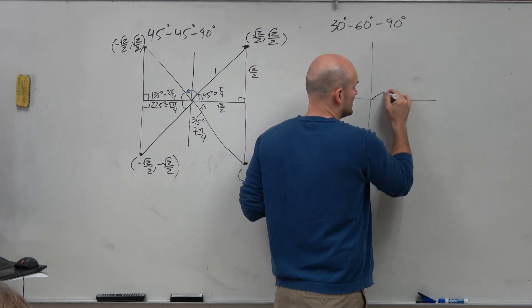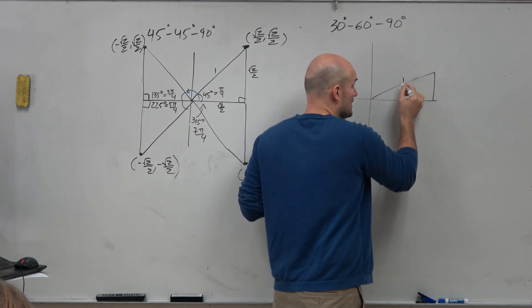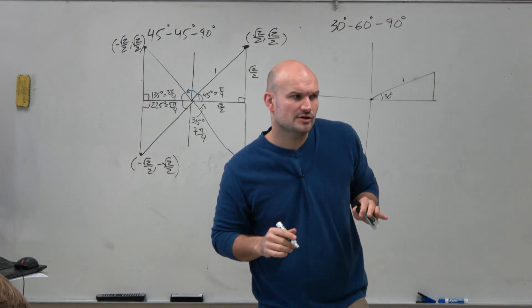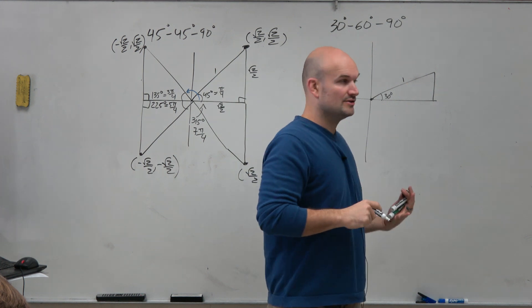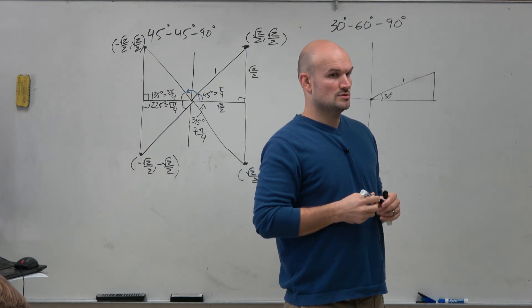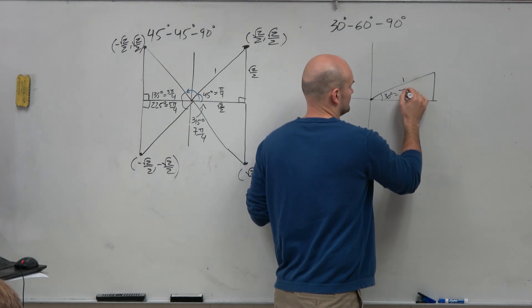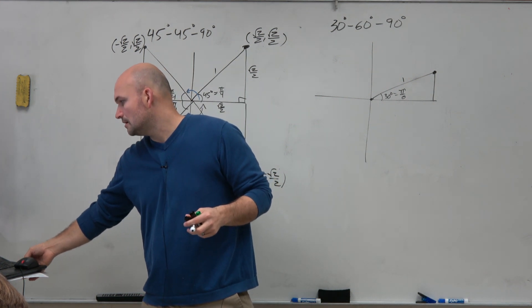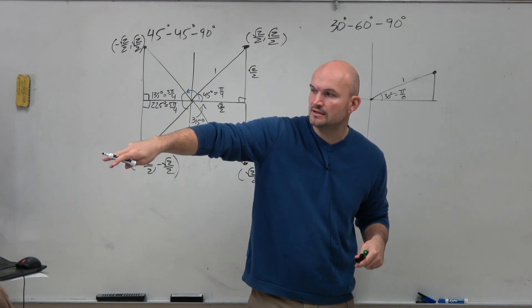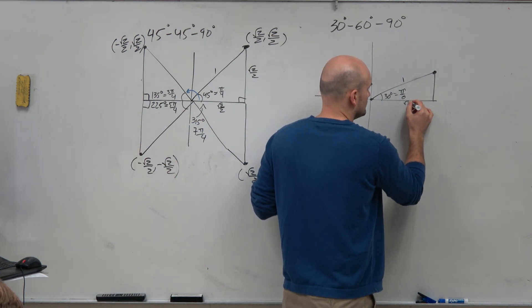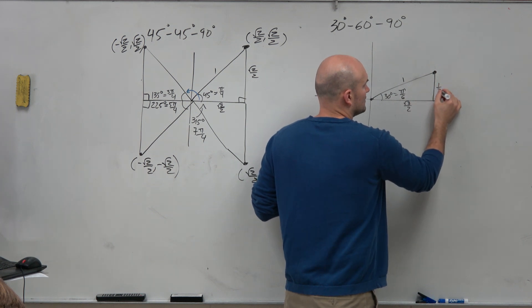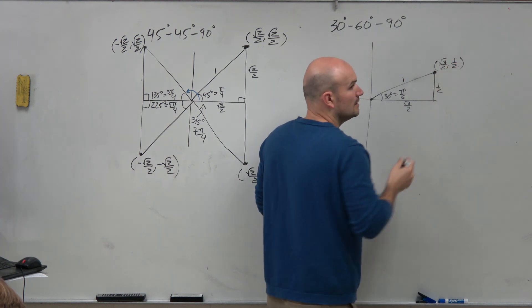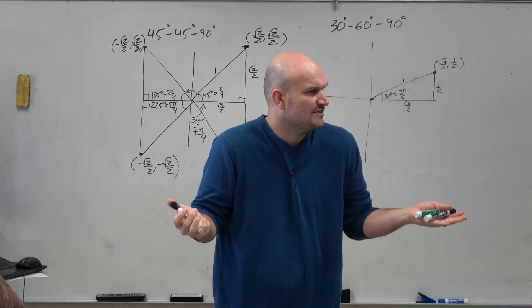Let's do a 30-60-90 triangle. If this is going to be 30 degrees, remember when the hypotenuse is 1 that makes our life a lot easier. At 30 degrees we're going to be dealing with square root of 3 over 2 and 1 half. The first coordinate point on the unit circle is square root of 3 over 2, comma, 1 half — and that's in the first quadrant, so everything's positive.